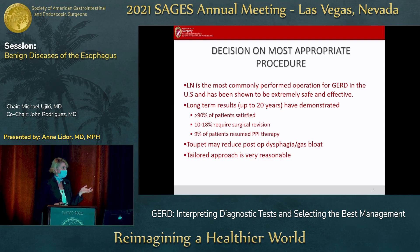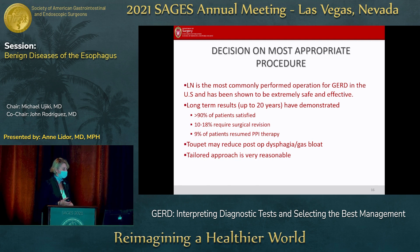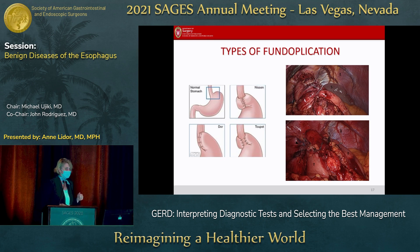The question is, what is the most appropriate procedure? For those who attended the GERD consensus this morning, there was a lot of discussion about whether to do a partial or full fundoplication. Right now in the United States, the Nissen fundoplication is the most commonly performed operation with lots of long-term data. However, all of the randomized studies comparing Nissen's with partial fundoplications show relatively equivocal outcomes for acid resolution, while partial fundoplication does seem to reduce postoperative dysphagia and gas bloat.